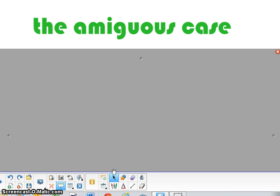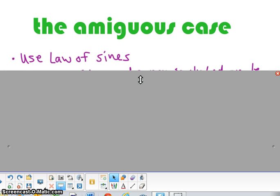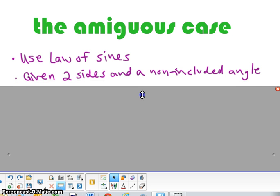Hi, this is Mrs. Slater, and in today's lesson, which is not covered in the book, we will learn the ambiguous case, which is using law of sines to solve a triangle given two sides and a non-included angle.